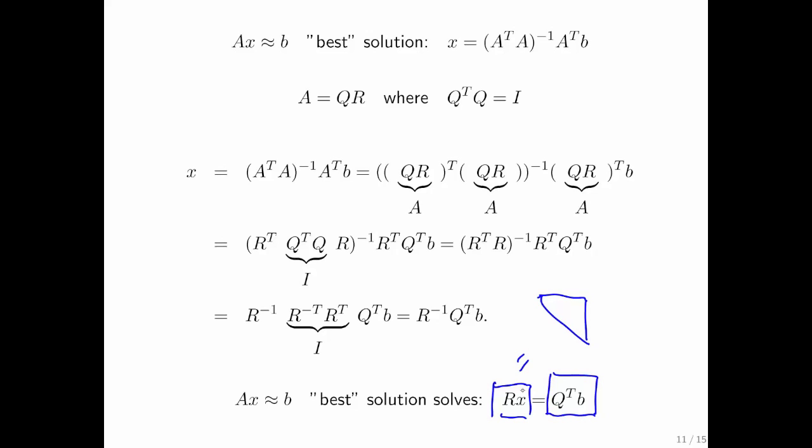So now we have an alternative way for solving x, which is the best solution to Ax approximately equal to b.